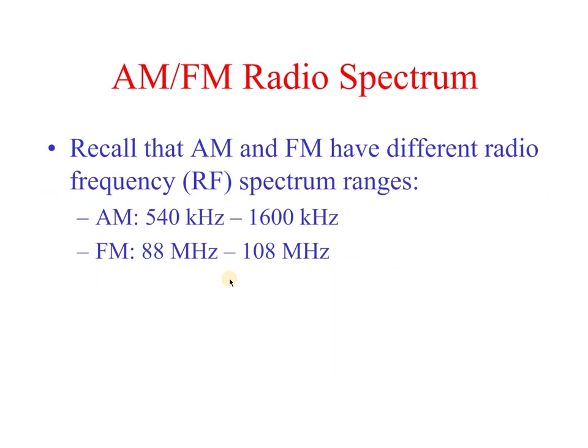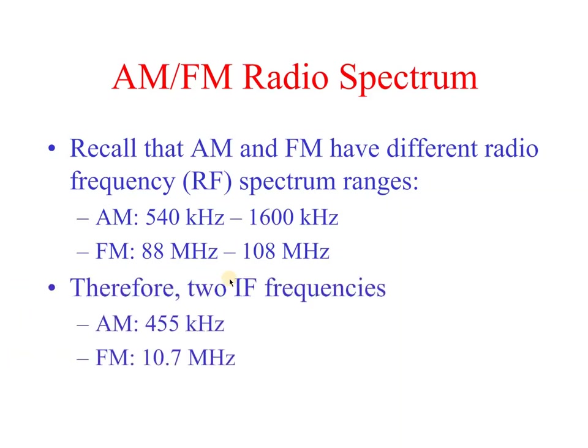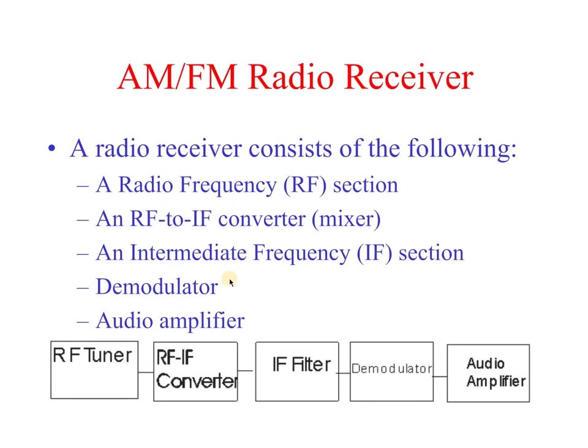AM and FM have different radio frequency spectrum ranges. AM ranges from 540 kHz to 1600 kHz, and FM ranges from 88 MHz to 108 MHz. Therefore two IF frequencies are needed: for AM the IF is 455 kHz, and for FM the IF is 10.7 MHz.